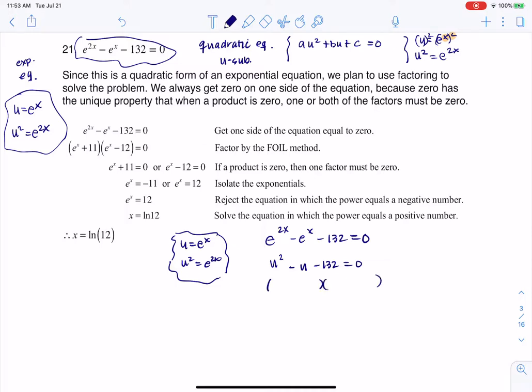So what are things that multiply to 132 but add to negative 1? Well, that's going to be 12 and 11, so I'm going to go u minus 12, u plus 11. That's equal to 0. So from the zero product property, either u minus 12 is 0, or u plus 11 is 0. So I get u is 12, or u is negative 11.